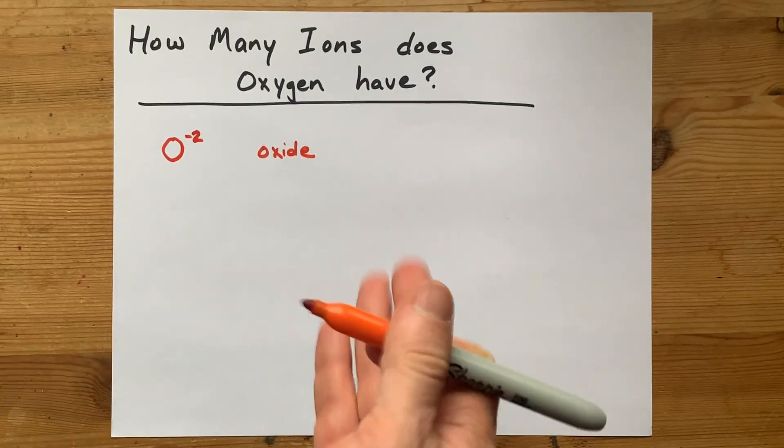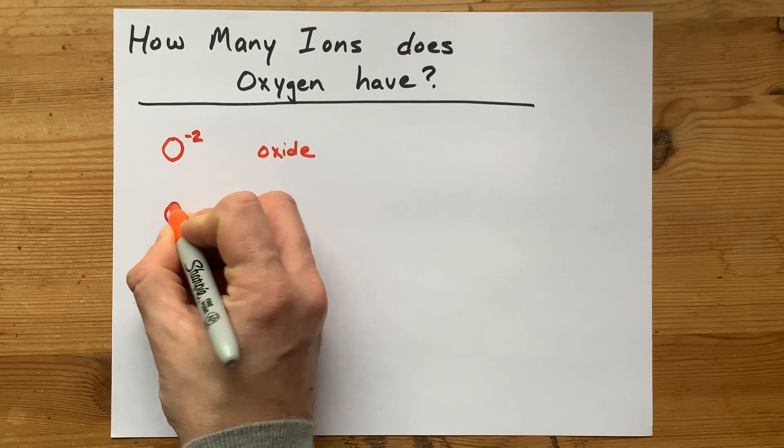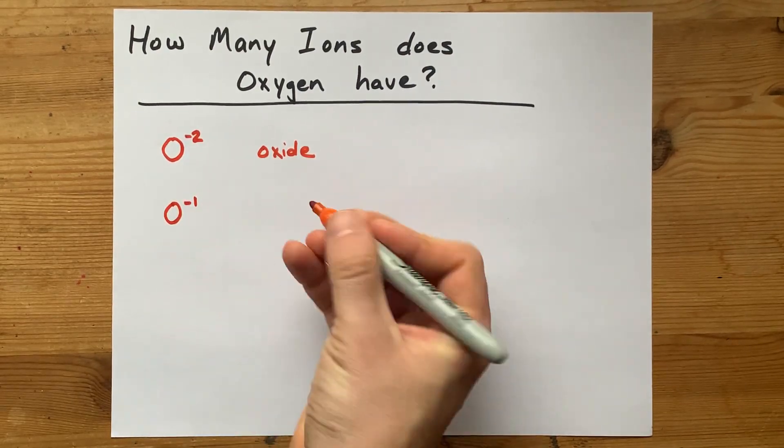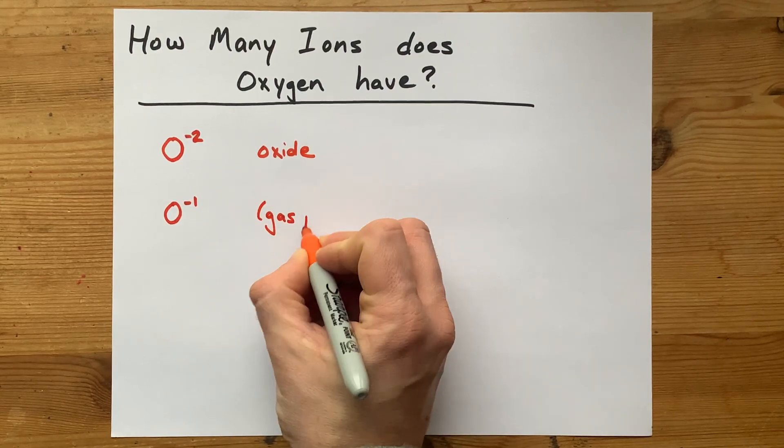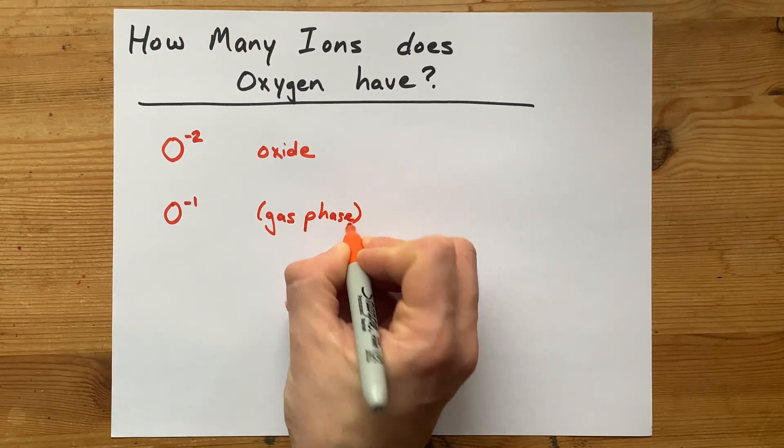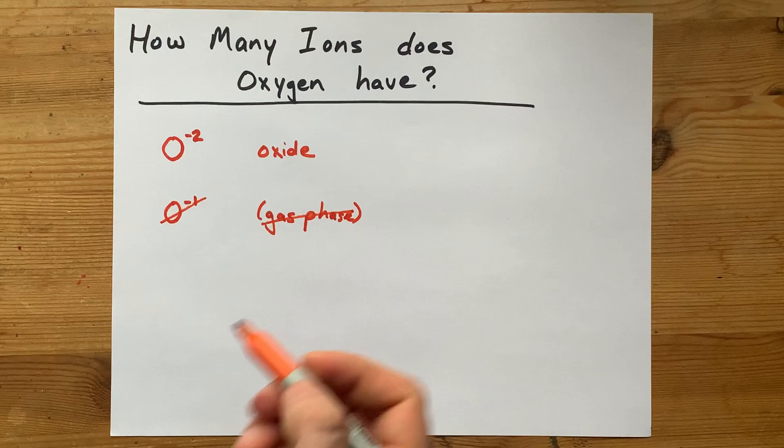But there are a couple of other options. So now O with a minus one charge is technically possible, but only in high energy gas phase environments. I really don't think that's what you're being asked here.